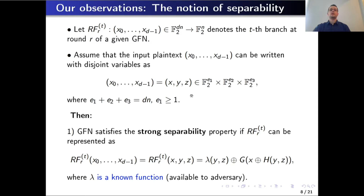We start with the following notation. By R_F^t we denote the output of the round function at round R in branch t. We also consider the representation of the whole input of the encryption scheme and partition it into three blocks x, y, and z, such that the length of block x is at least 1. These requirements are for the case when block x is treated as a variable, while blocks y or z can be of length 0, in which case they are not present.